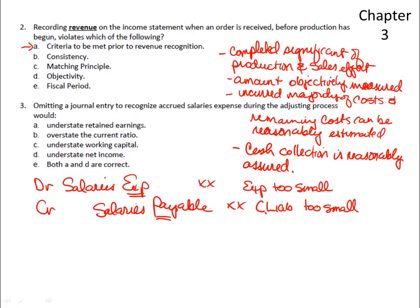In reviewing for the first exam, here are two multiple choice questions. Question 2 has to do with recording revenue on the income statement when an order is received, but before production has begun — which violates which of the following?